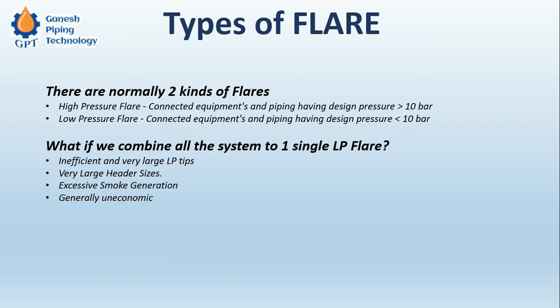There are normally two kinds of flare systems: high pressure flare and low pressure flare. The high pressure flare is connected to equipment and piping having a design pressure greater than 10 bar, while the low pressure flare is connected to equipment and piping with a design pressure less than 10 bar. That is the main difference between them.